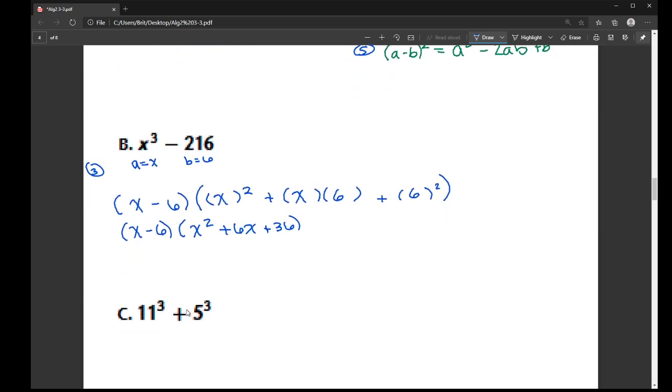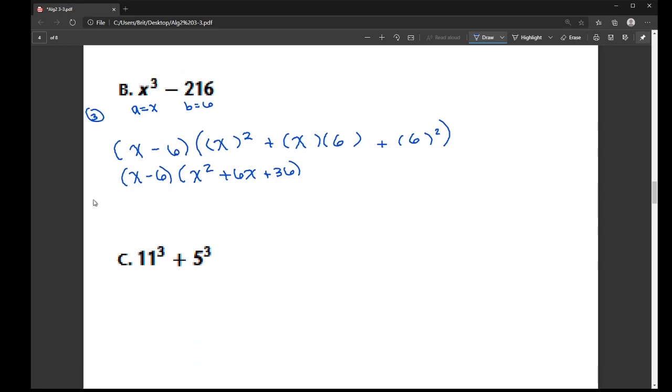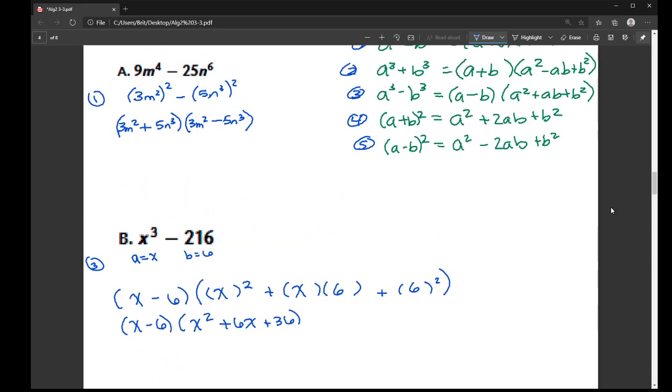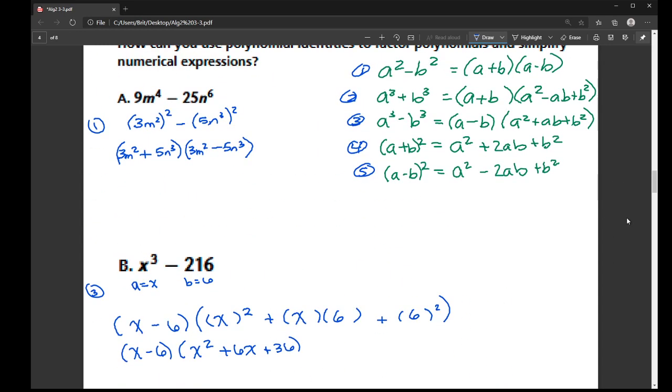Now this one, again, they're getting quirky with their numbers. We don't normally apply these to numbers. But we have two cube values being added. So I'm going to use this formula up here. So it's, that was what, formula two? So we have a plus b times a squared minus ab plus b squared. Let me double-check to make sure my signs are there. That one should be a minus, not a plus.